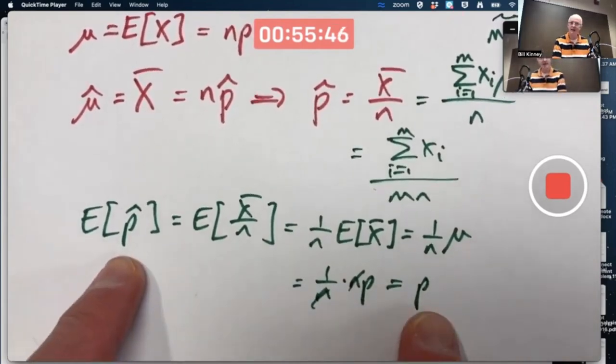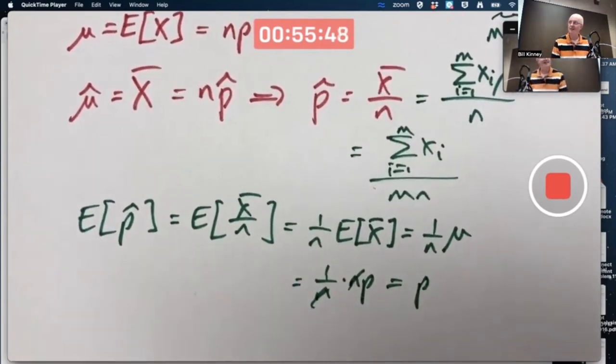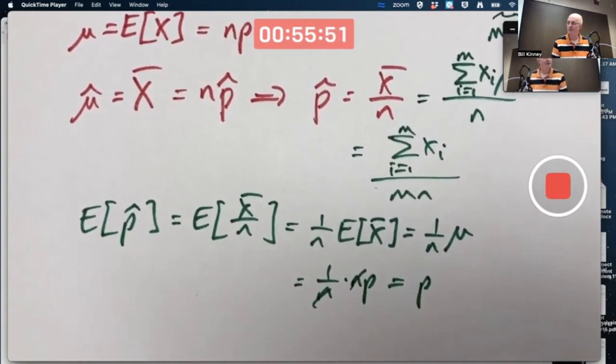So yes, the expected value of p̂ is P. Therefore, p̂ is unbiased. It's an unbiased estimator for P.